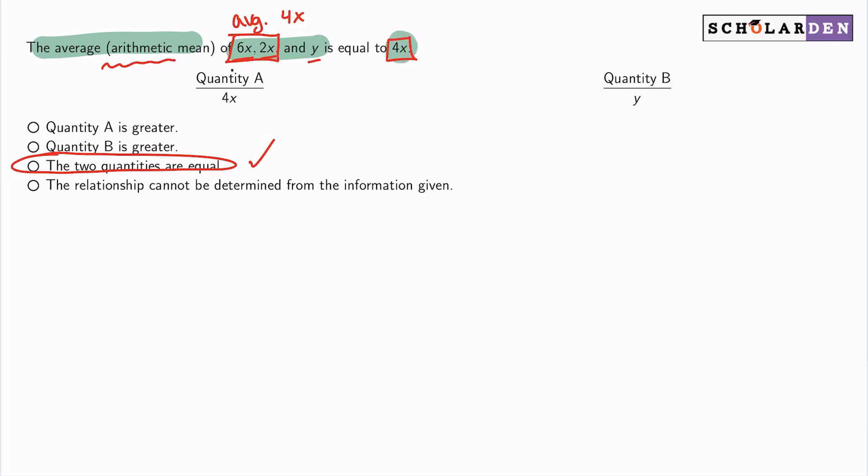So 6x plus 2x plus y. We divide by the number of numbers. So there's three numbers here. And that results in the average or 4x that they give us.